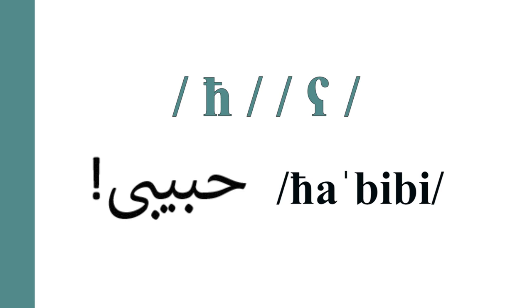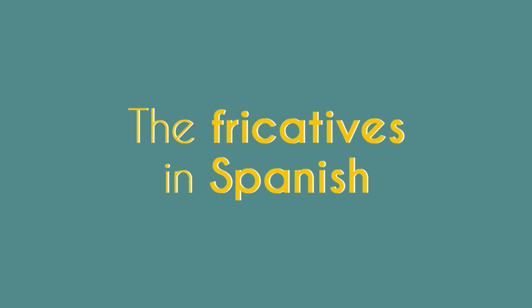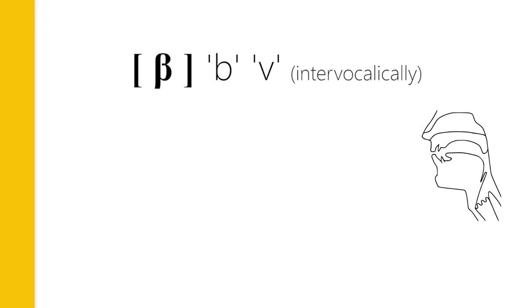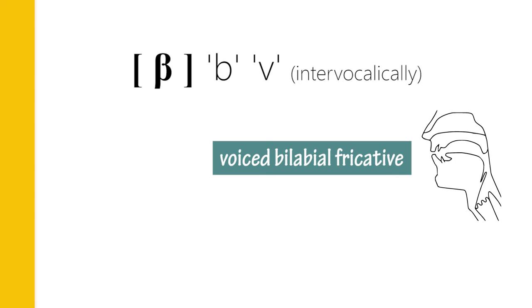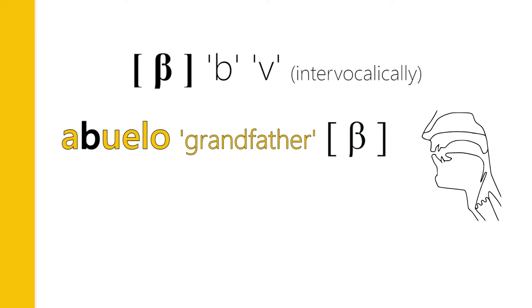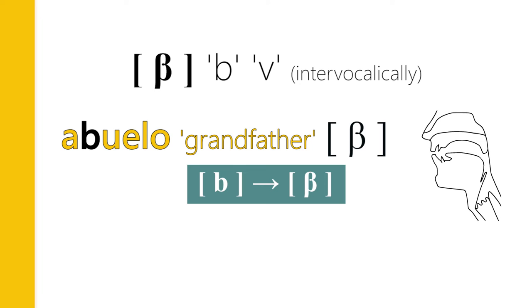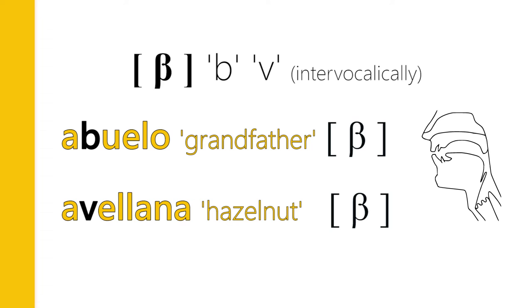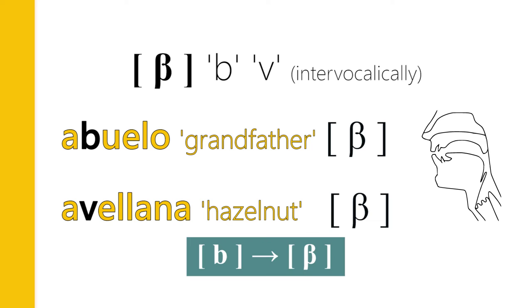Another language that is famous for its fricatives is Spanish. A very famous sound in Spanish — which represents both the letters 'b' and 'v' in the intervocalic position — is the symbol that looks like a beta /β/. It's a voiced bilabial fricative. So in a word like 'abuelo', for example, the 'b' is fricativized into /β/ — 'abuelo'. Similarly, the 'v' in 'avellana' is pronounced the same way — 'avellana', meaning 'hazelnut'.